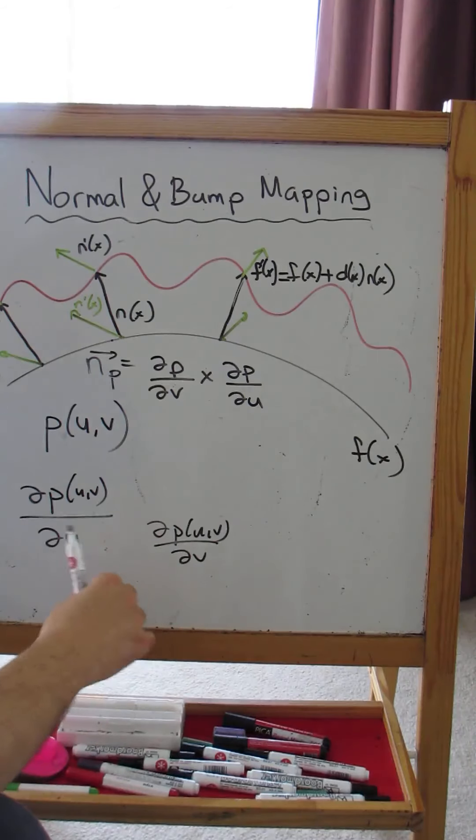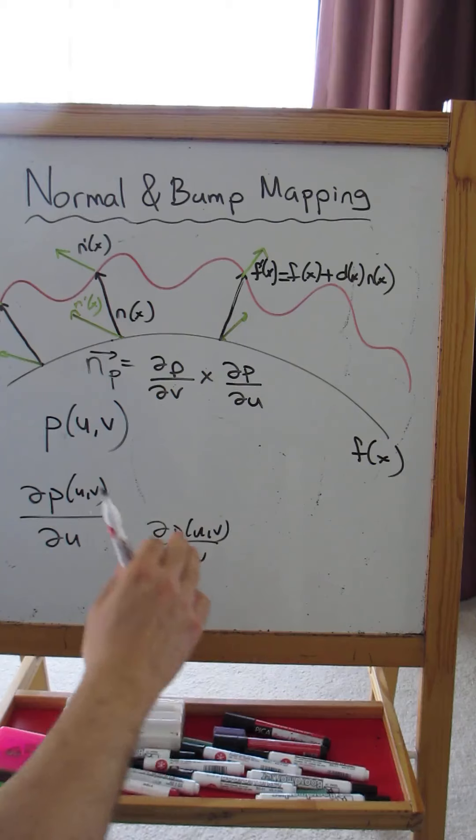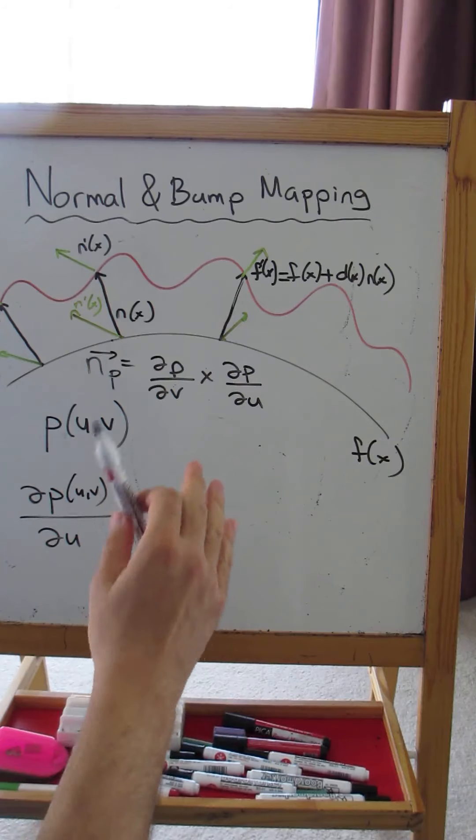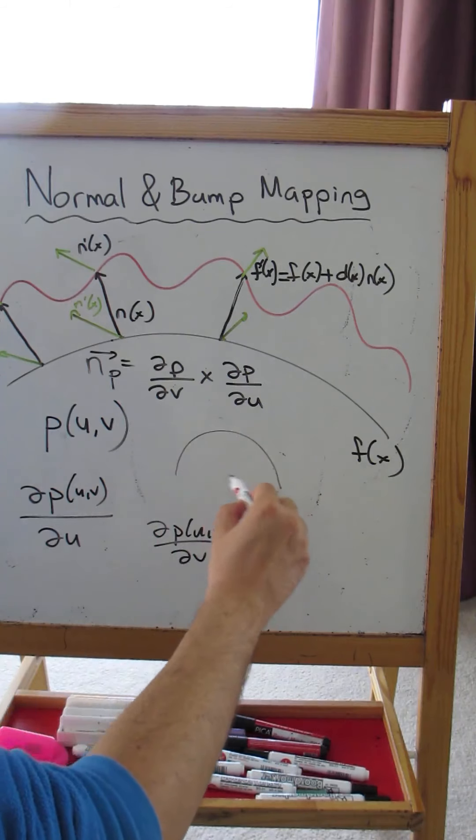When I have two tangent vectors like that, one with respect to u and the other with respect to v, these tangent vectors define the tangent plane. So let's draw our sphere again.